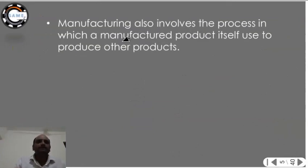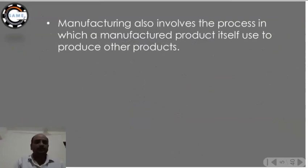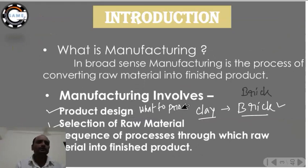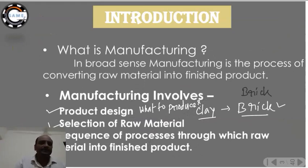Manufacturing also involves the process in which a manufactured product itself is used to produce other products. Product design means deciding what to produce — what is my need and what I have to produce to fulfill that need. That is what product design means.